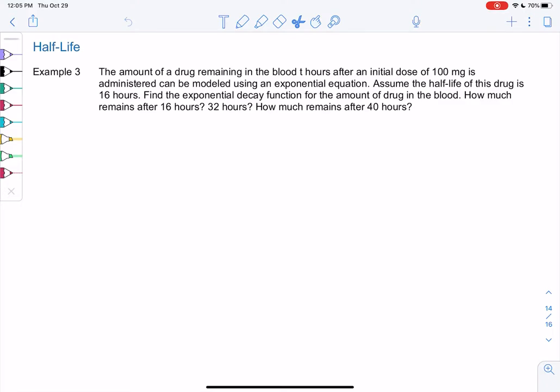So the amount of drug remaining in the blood t hours after an initial dose, which sounds super important, right? Doesn't that sound like that P0, the initial amount? Let's write that down immediately. So the amount of a drug remaining in the blood after an initial dose is administered can be modeled using an exponential equation. So we're going to assume half-life is 16 hours.